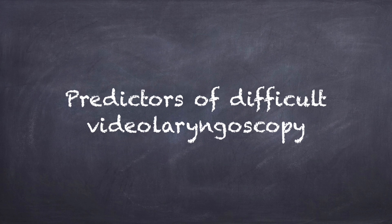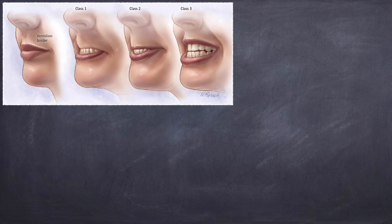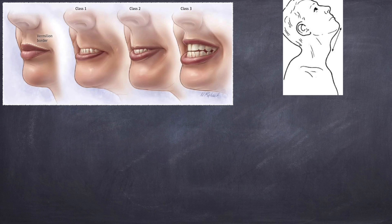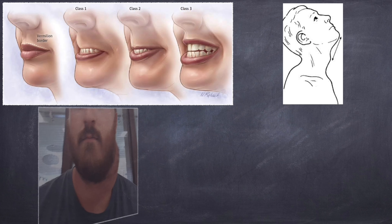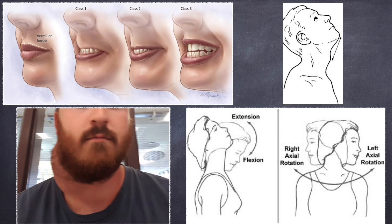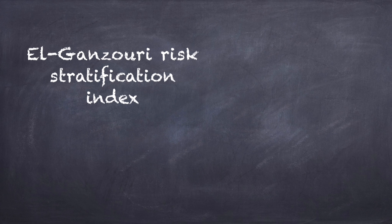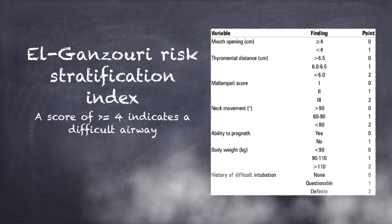Predictors of difficult video laryngoscopy include abnormal upper lip bite test, short thyromental distance, presence of large neck pathology, and highly restricted cervical spine motion. An El-Ganzouri Risk Index score of more than four can be used to identify a difficult airway.